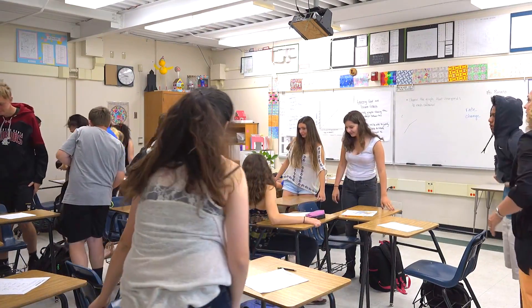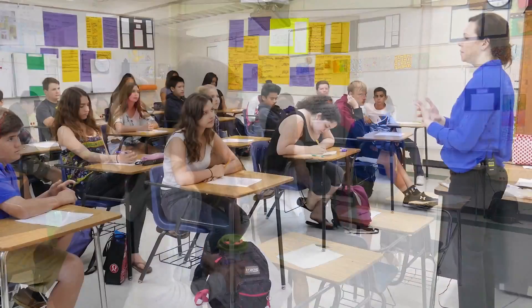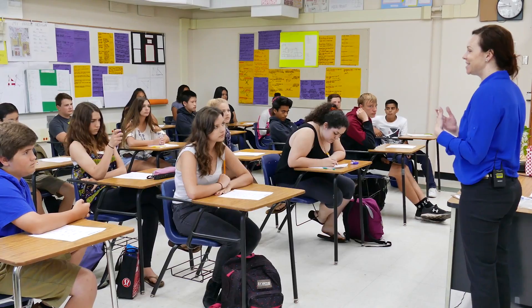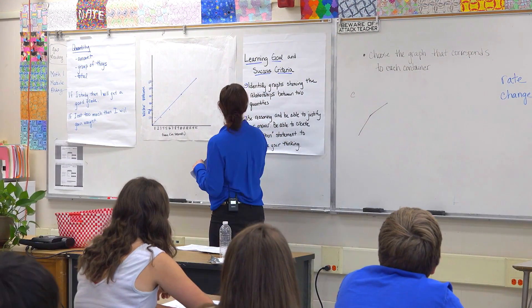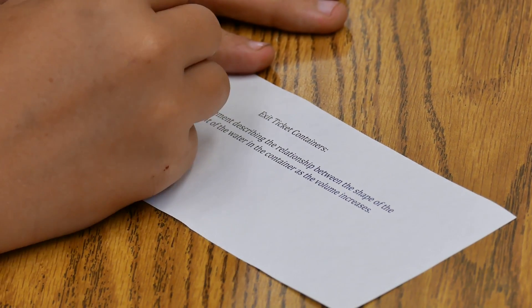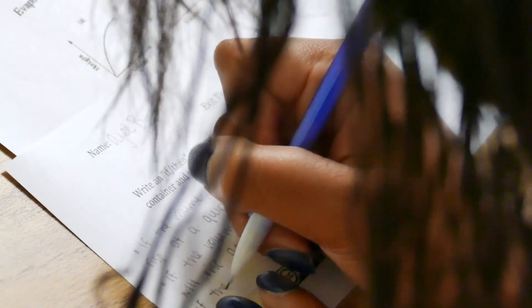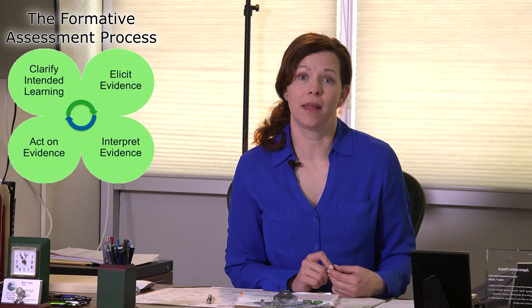Students went back to their original seats and had time to reflect on the process and revisit their original task to see if they wanted to revise any of their thinking. They then completed an exit ticket, writing an if-then statement to communicate their understanding of the relationship between the two quantities. The information I gathered from the exit slips and from listening to conversations would inform next steps — including working with the classroom teacher to develop the next lesson.